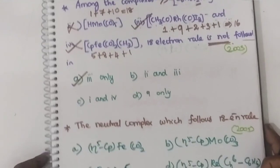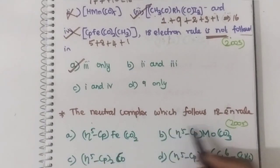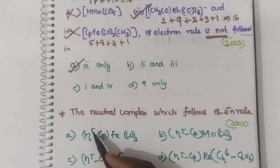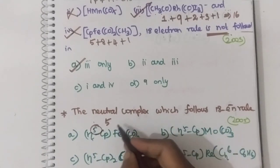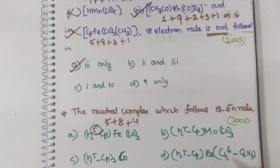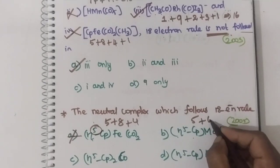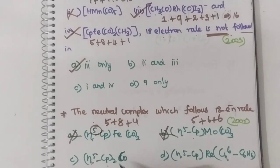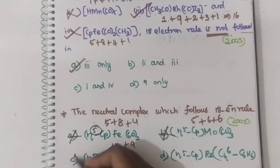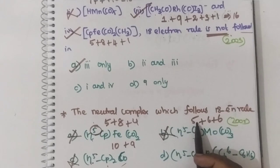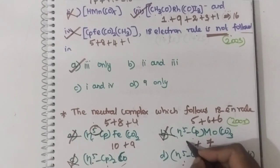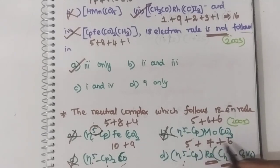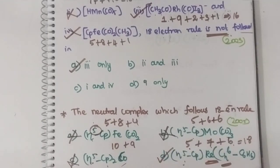Sixth question: the neutral complex which follows the 18 electron rule. Option A, Cp·Fe(CO)2: 5 + 8 + 4 = 17 — not the option. Option B, Cp·Mo(CO)3: 5 + 6 + 6 = 17 — not the option. Option C, Cp2·Co: 10 + 9 = 19 — not the option. Option D, Mn(η5-Cp)(η6-C6H6): manganese = 7, η5-Cp = 5, η6-benzene = 6. Total: 7 + 5 + 6 = 18. Hence this is the correct answer.